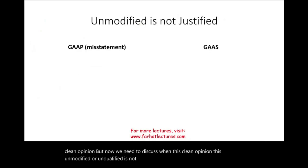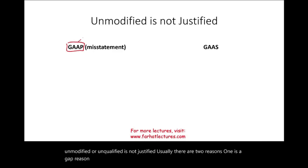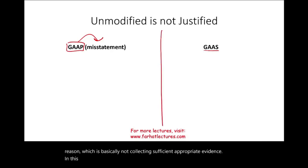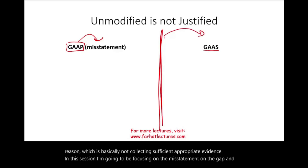There are usually two reasons a clean opinion is not justified: a GAAP reason, meaning there is a misstatement, and a GAAS reason, which is not collecting sufficient appropriate evidence. In this session we will focus on misstatements under GAAP. In the next session we will look at GAAS.